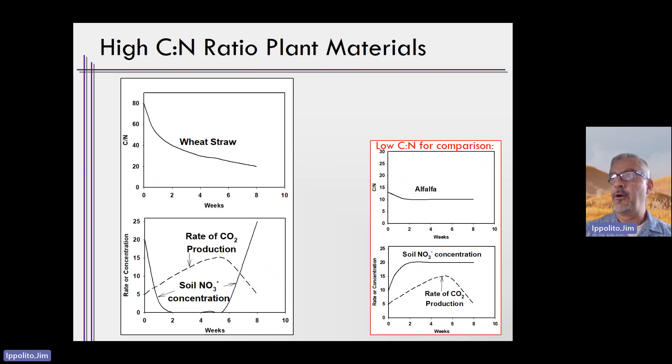This figure shows you the graph on the right of when we add a low carbon to nitrogen ratio material to a soil. We've discussed this in the mineralization video. On the left, we discuss the addition of a high carbon to nitrogen ratio material to a soil. For this illustration, let's pick on wheat straw. Wheat straw has a high carbon to nitrogen ratio, unlike alfalfa on the right-hand side.